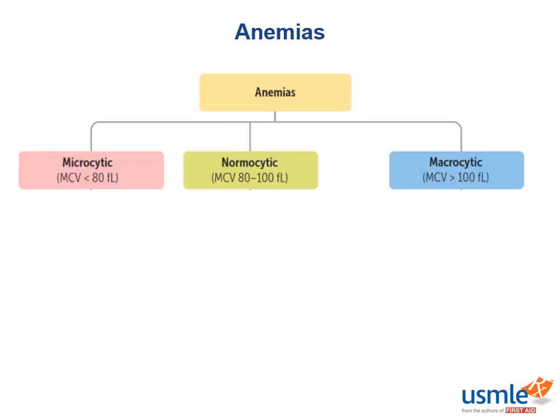Now that we understand the basic definition of anemia, let's talk about how we classify anemia. The easiest way to classify anemia is actually based on how big or small the red blood cells are — this is a good clinical way to organize your thoughts. Red blood cell size is measured through a lab test called MCV, or mean corpuscular volume. MCV is quite literally the average size of the cell measured in microns.